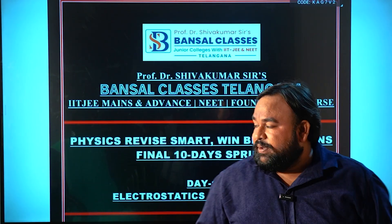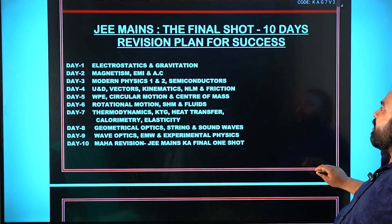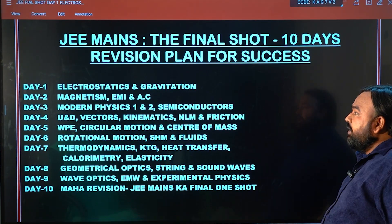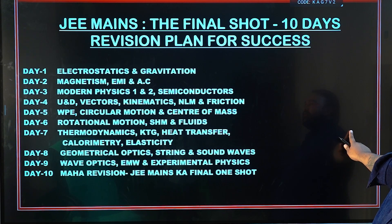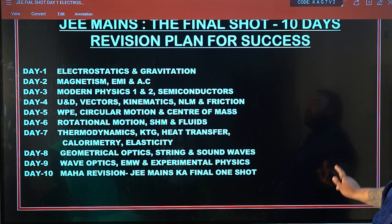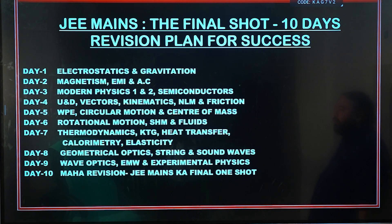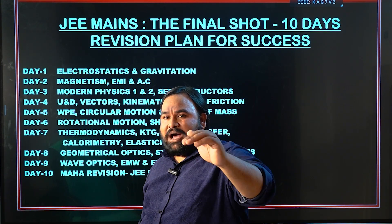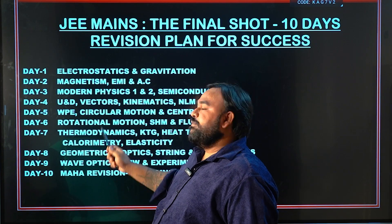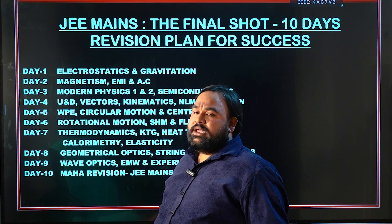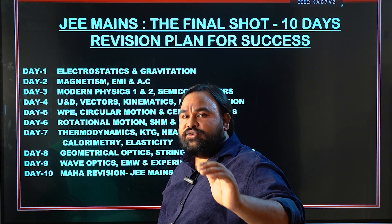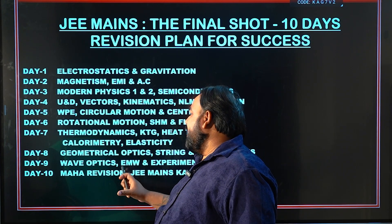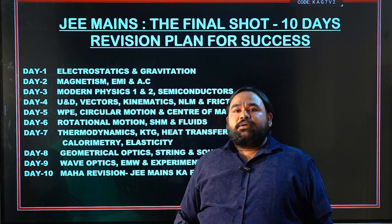What exactly we are doing in these 10 days — JMS's Final Shot: 10-day revision plan for success. Day 1: March 20th, Day 2: March 21st, Day 3: March 22nd, Day 4: March 23rd, Day 5: March 24th, Day 6: March 25th, Day 7: March 26th, Day 8: March 27th, Day 9: March 28th, Day 10: March 30th.